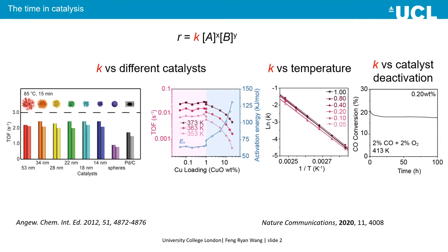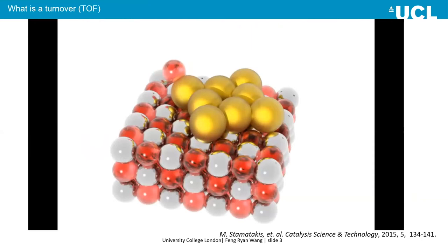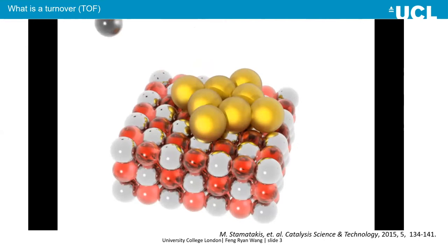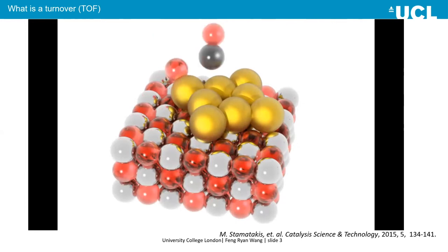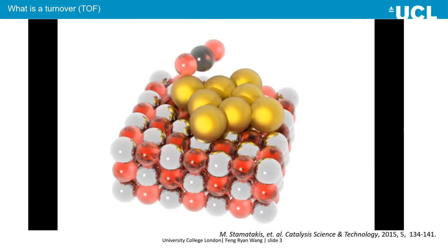I want to introduce turnover frequency using a molecular simulation of CO oxidation on the surface of a gold cluster — eight gold atoms as a catalytic active site sitting on the surface of manganese oxide. The CO on the surface reacts with oxygen, undergoing oxygen dissociation, and finally forms CO2. Another CO molecule is involved, and the rest of the oxygen forms another CO2 molecule. This is what we call a turnover.